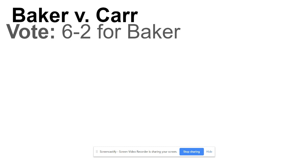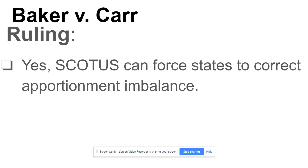The vote was 6-2 for Baker — one justice didn't vote. Under the ruling, yes: SCOTUS, the Supreme Court of the United States, can force states to correct apportionment imbalances. The 14th Amendment applies here, and therefore the Supreme Court can force a state to redistrict, redraw boundaries, and reapportion legislative seats between cities and rural areas. States must address this imbalance after a census.